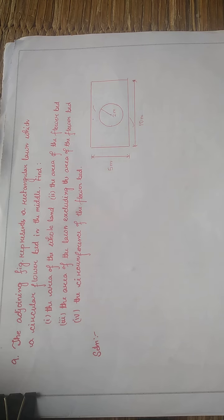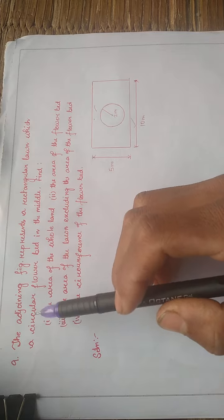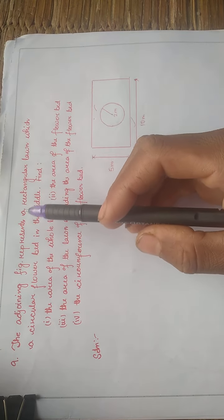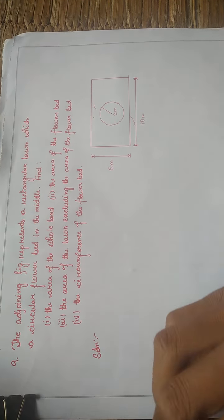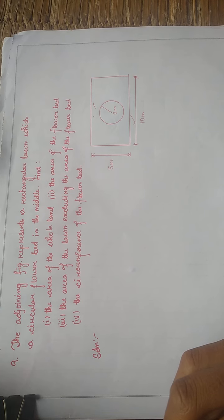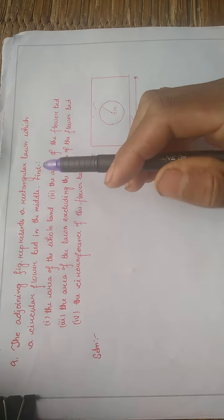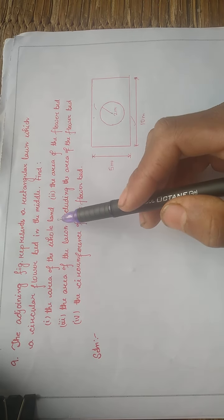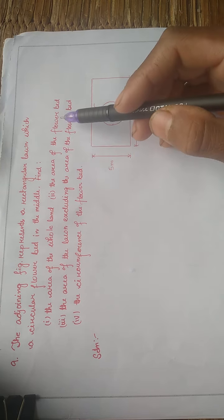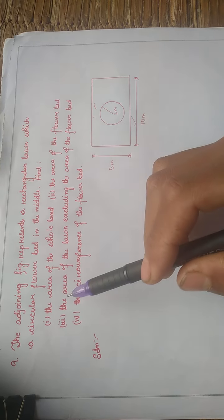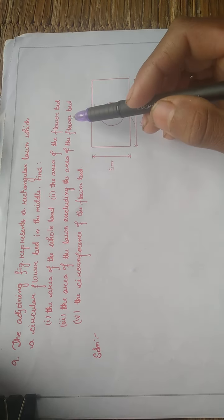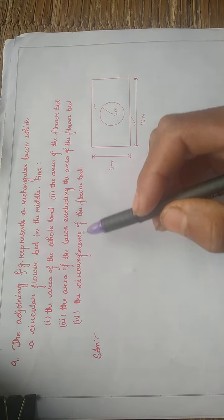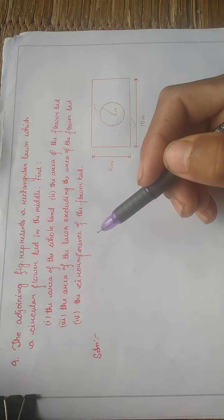Question No. 9. The adjoining figure represents a rectangular lawn with a circular flower bed in the middle. Find: the area of the whole lawn, the area of the flower bed, the area of the lawn excluding the area of the flower bed, and the circumference of the flower bed.